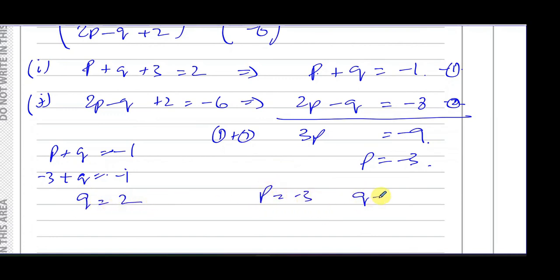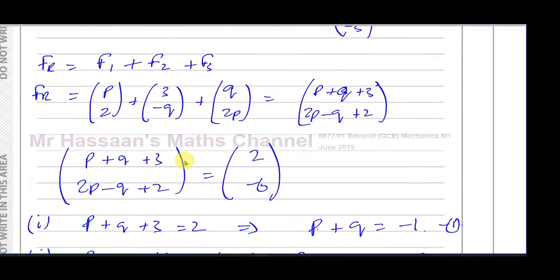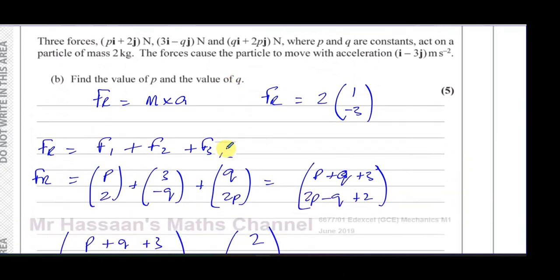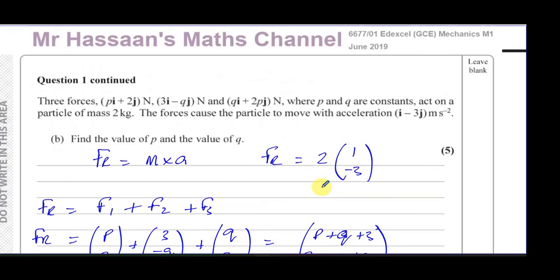So you end up with p equals -3 and q equals 2. Those are your solutions. You can make sure that they actually give you the right resultant vector. You have p is -3 and q equals 2. If you put that in here, you're going to have -3 + 3, which is 0, plus 2, so that gives you 2. That's correct. And then when you put in here, you've got 2 - 2, which is 0, plus -6, which is exactly correct. So those values get you this vector exactly. You can make sure that you've got the right values of p and q in the end.